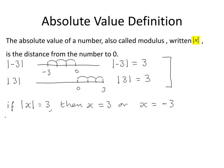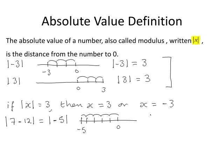Let's take another example. Suppose you're asked to find the absolute value of seven minus twelve. This is the absolute value of minus five, which is the distance from minus five to zero. On the number line, the distance from minus five to zero is five units, so the absolute value of minus five is equal to five. The absolute value of zero is the distance from zero to zero, which is zero.